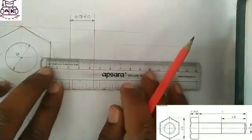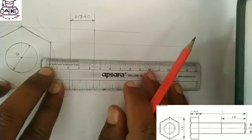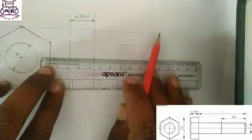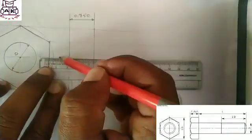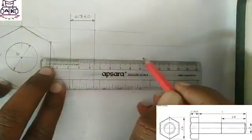0.7*2D is the head of the bolt. Please draw the center axis or center line.